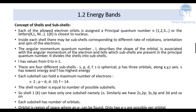Each subshell can hold a maximum number of electrons: S can hold 2, P can hold 6, D can hold 10, and F can hold 14 electrons. The shell number equals the number of possible subshells. The first shell (K) has only one subshell: 1S. Similarly, we have 2S, 2P, then 3S, 3P, 3D, and so on — progressing through S, P, D, and F subshells.